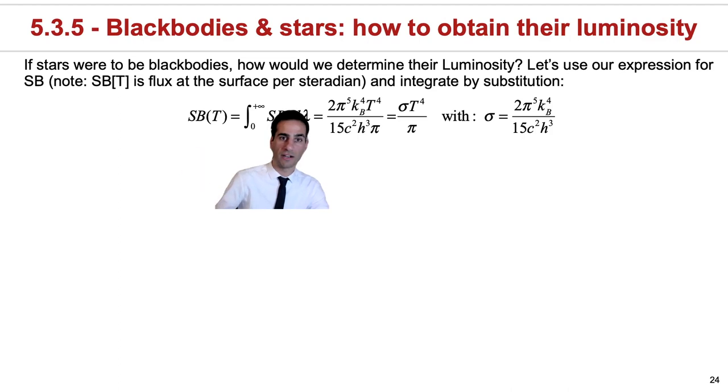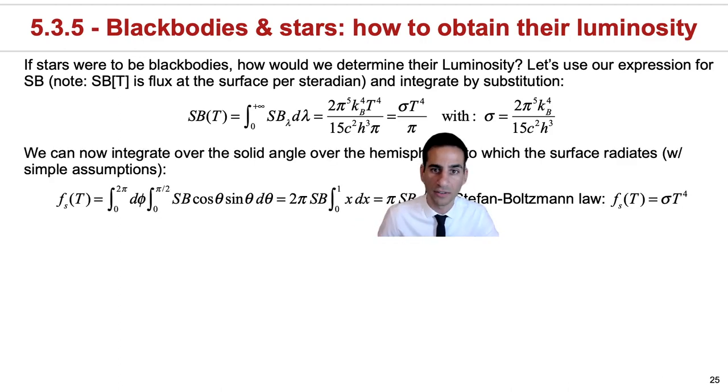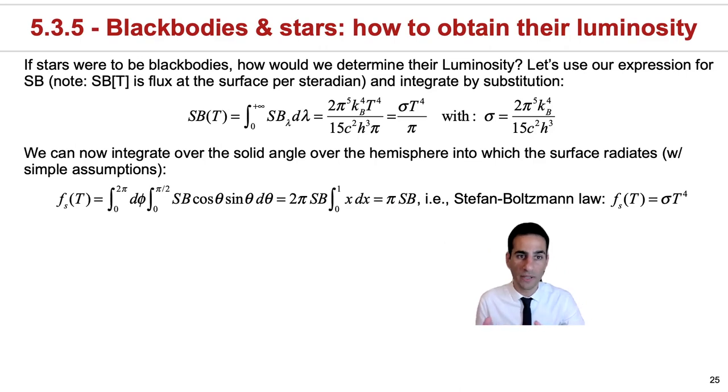This is the reason why here I no longer have a lambda as a subscript, because it no longer depends on the wavelength. And the next step that we're going to do, because this still depends on steradian, is to integrate it over essentially the angle that we are actually covering. We will integrate it over the solid angle, over the hemisphere into which the surface radiates, and this requires very simple assumptions.